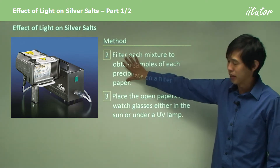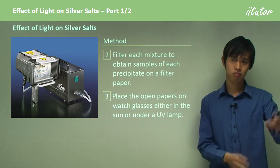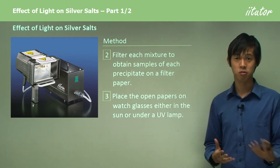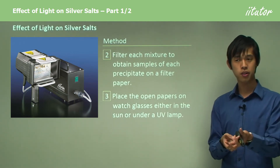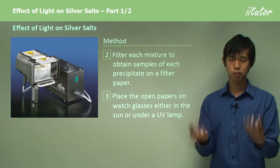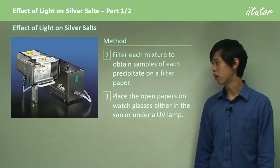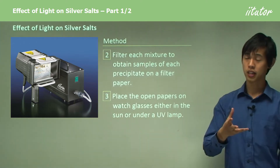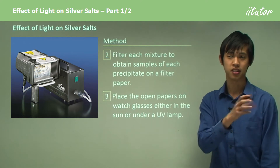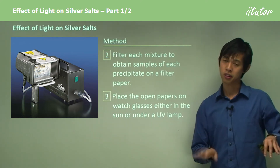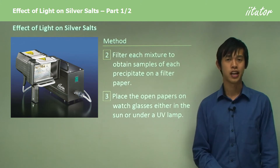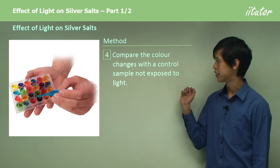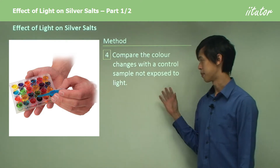Place the open filter papers on watch glasses either in the sun or under a UV lamp. The sun acts as the earth's own UV lamp, about 200 million kilometers away. Put your silver chloride and silver bromide on watch glasses and leave them out in the sun or under a UV lamp. A UV lamp is preferable because you don't know what else is in the sun's spectrum that could alter your results.